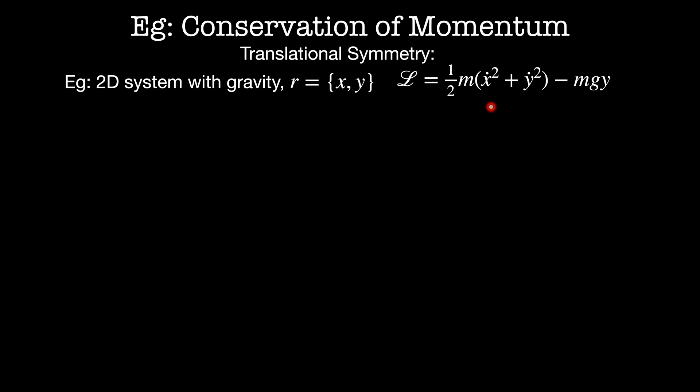Let's see how these symmetries show up in some of the physics that we've seen before. Let's start by looking at a continuous translational symmetry. For example, a 2D system with gravity, where our initial coordinates are given by x and y. Then my Lagrangian in these coordinates is one half m x dot squared plus y dot squared minus mgy.